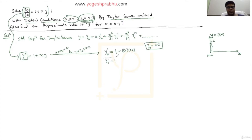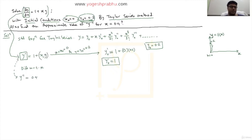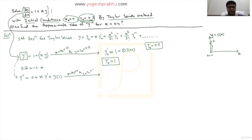Now we differentiate y dash equals 1 plus xy with respect to x. The derivative of 1 is zero, and for the term xy we apply the product rule: y double dash equals x times y dash plus y times 1. So y double dash equals x·y dash plus y. Now we substitute x equal to x naught which is 0 and y equal to y naught which is 0.2.